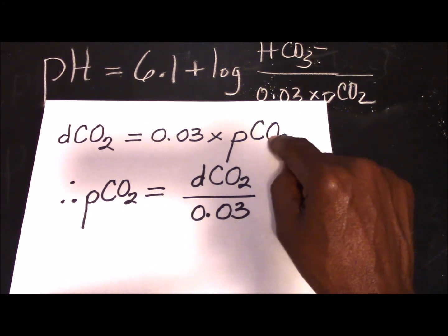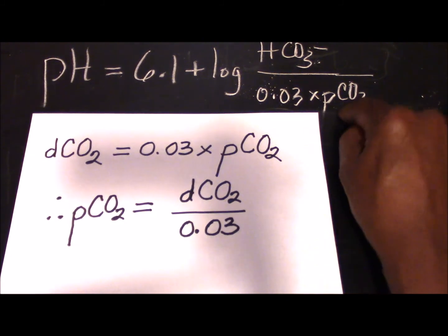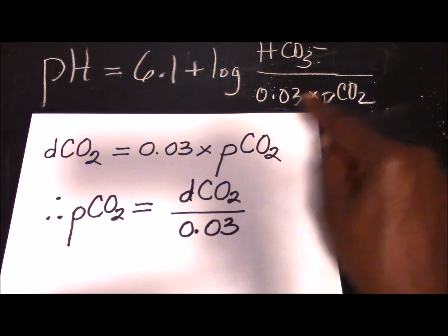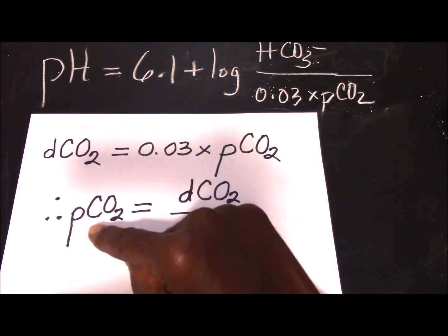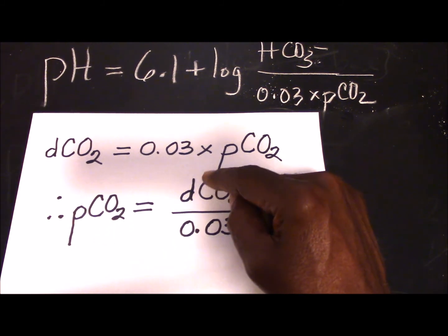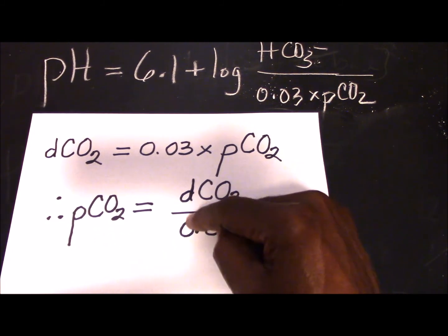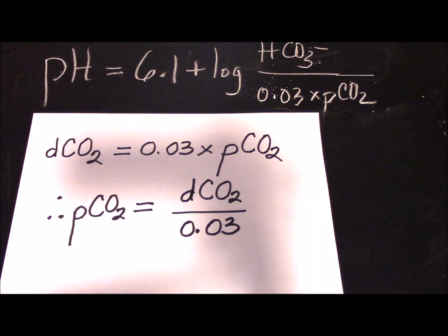Now since what you want is the partial pressure of carbon dioxide to be able to fit it into this formula, you will extrapolate this and then it turns out to be the DCO2 divided by 0.03. And that is the little trick there, and that could be a turn-off if you are not prepared for it.